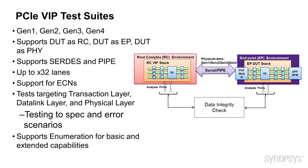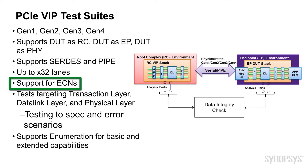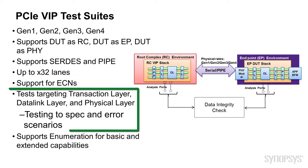The next thing I want to introduce is our PCIe test suites. They're all source code based, written in UVM. We provide all the key sequences also available in source, which you can use to develop your own tests. The test suites support Gen 4 all the way down to Gen 1, with support for root complex, DUT, and PHY. We support CERTES and pipe mode, up to 32 lanes, and many of the ECNs. We also have very specific tests targeting the individual transaction layer, data link layer, and PHY layer.